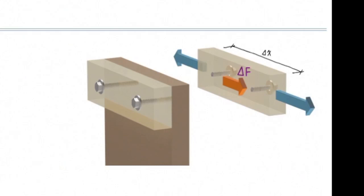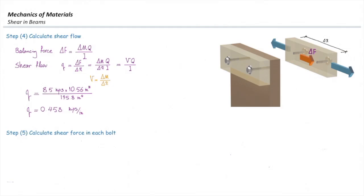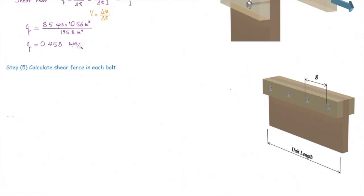The fasteners are responsible for transferring that shear flow from the right segment to the rest of the section — to the web. Now, based on that, we can determine how much shear force is in each fastener. In step five, we want to determine how much shear force is in each bolt. Taking a unit length of the beam, the spacing between bolts is S.